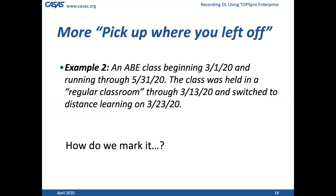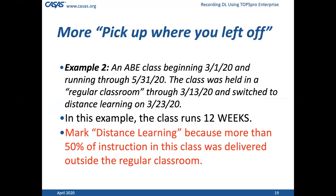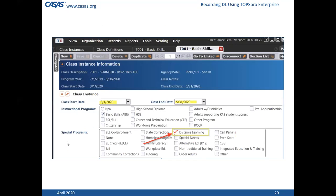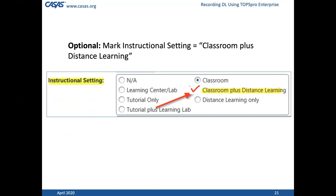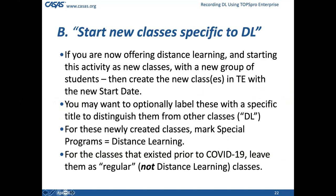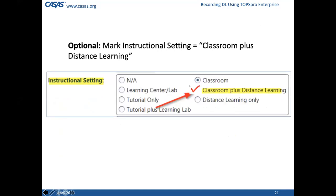Here's another example — the ABE class, the 7000 class. It begins on March 1st and runs through May. This class was held in a regular classroom for only the first two weeks, then switched to distance learning on March 23rd. We did our calculation with weeksuntil and realized it's 12 weeks, so we're going to mark distance learning because more than 50% of the instruction will be delivered outside of the regular classroom. Because the class had the first two weeks of classroom and then switched to distance learning, we'll use 'classroom plus distance learning.'